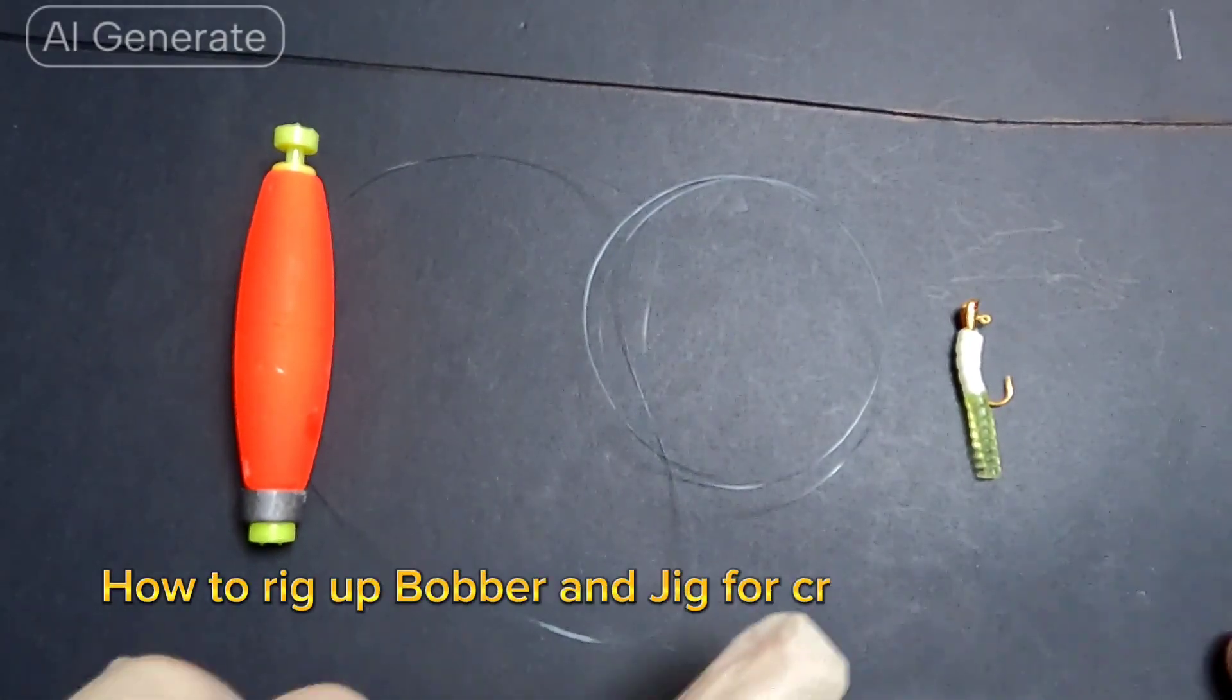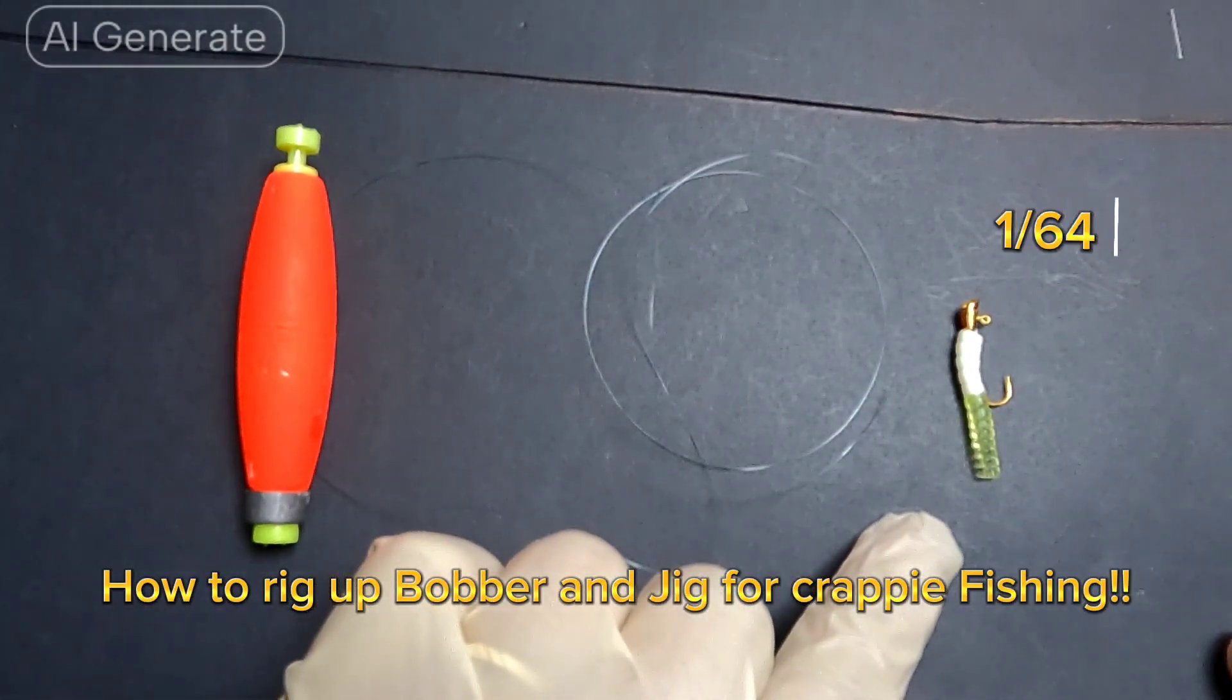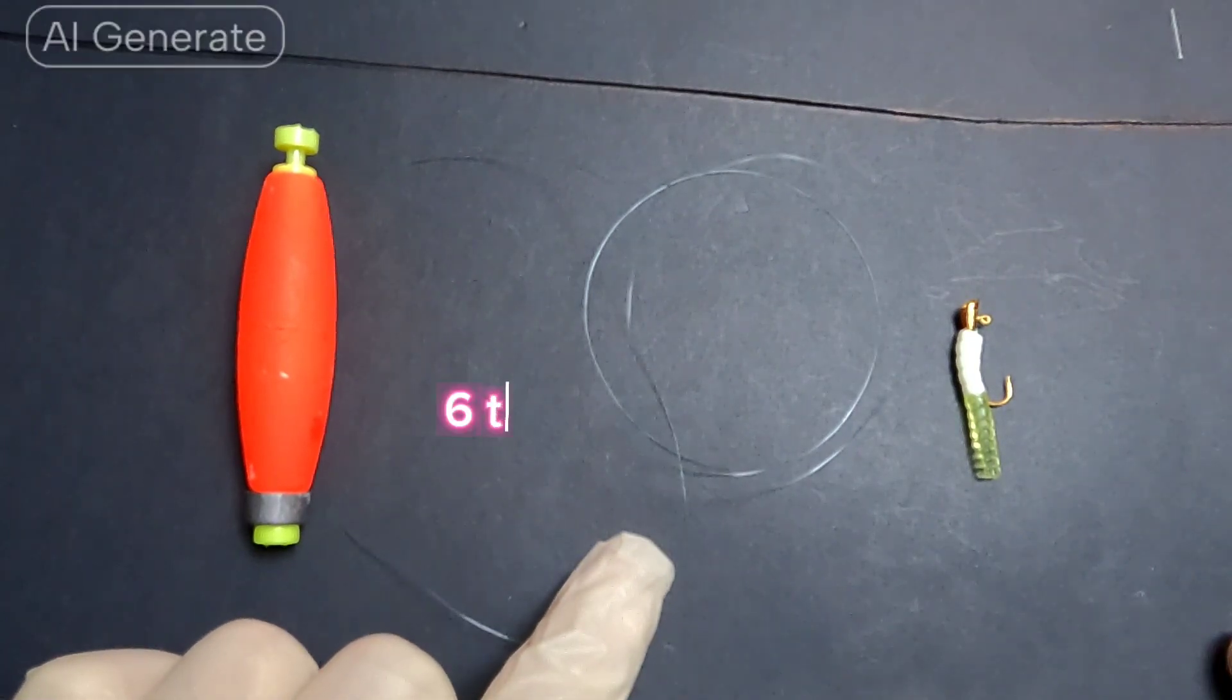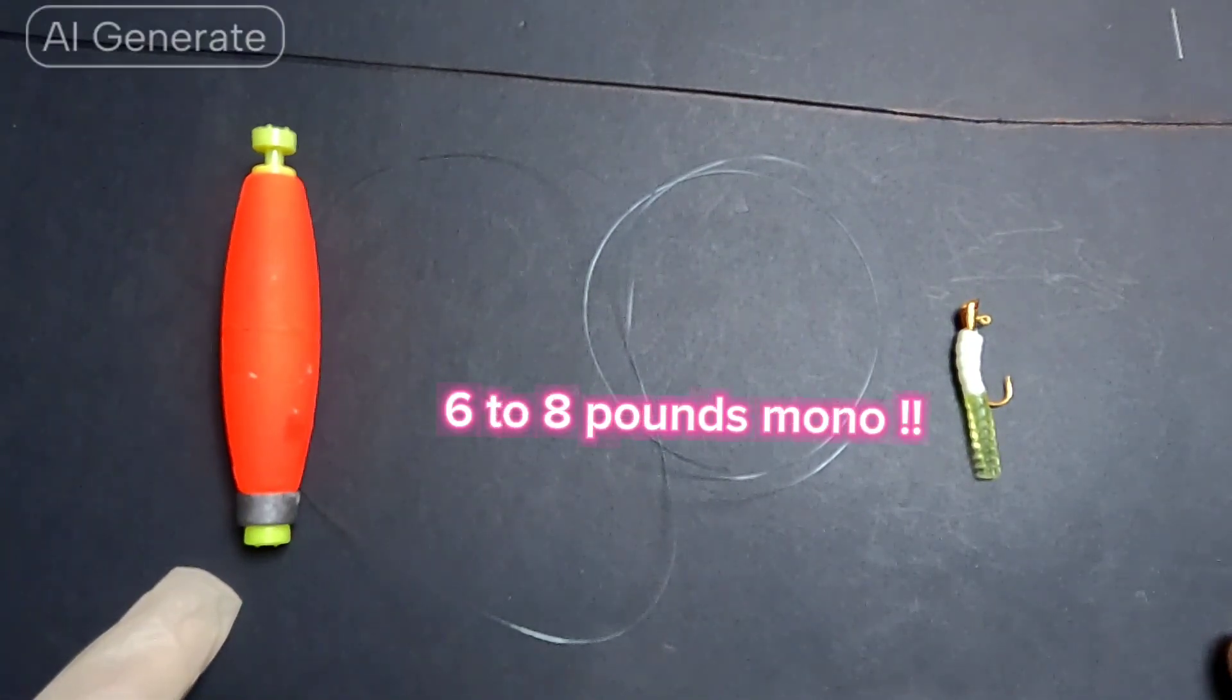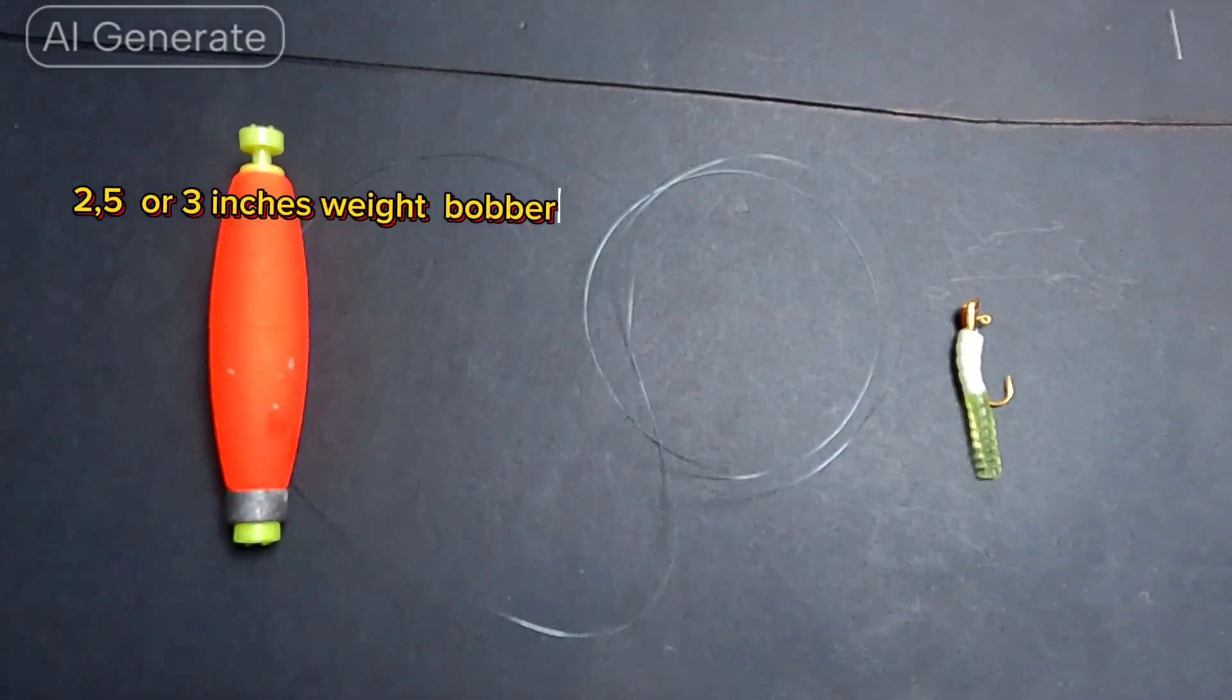How to rig up bobber and jig for crappie fishing. You'll need a 1/64 jig, 6 to 8 lb mono line, and a 2.5 or 3 inch weighted bobber.